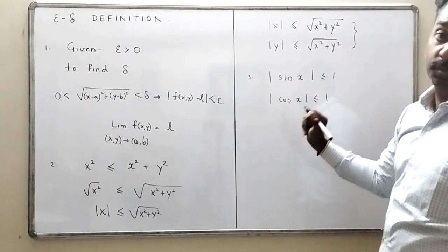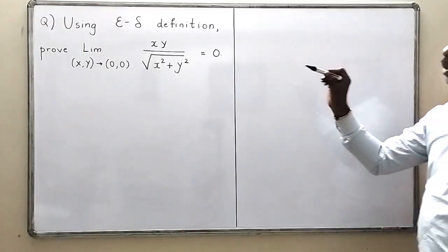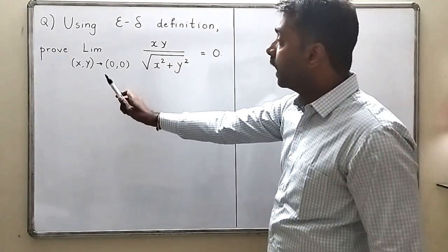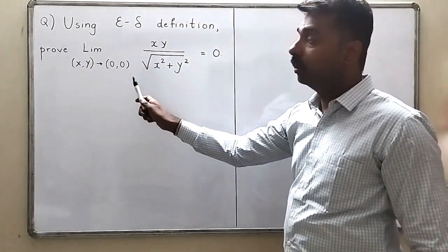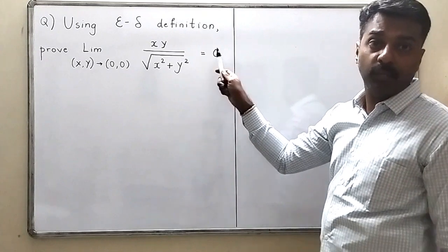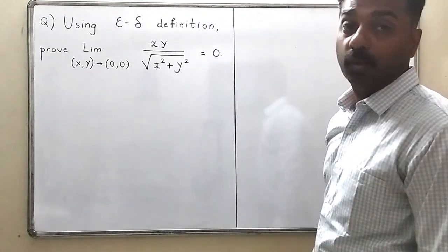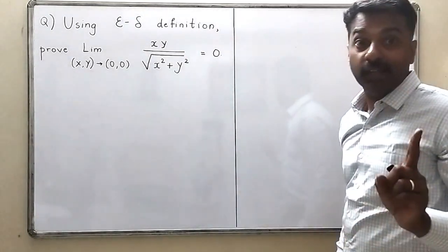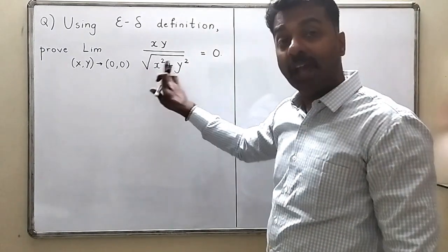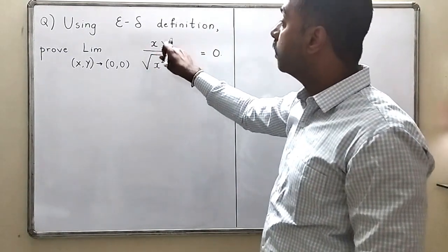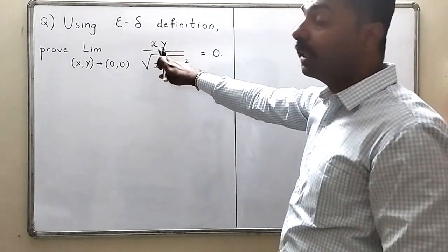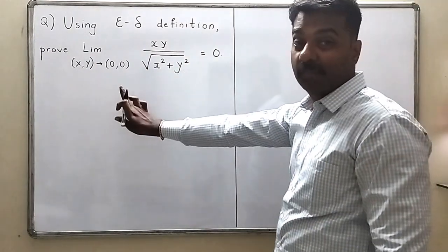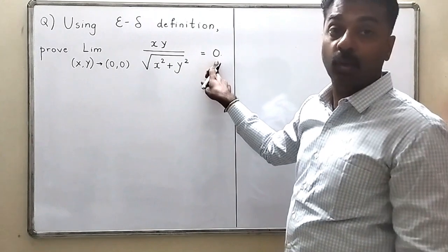Using epsilon-delta, I want to prove that the limit as (x,y) → (0,0) of xy / √(x²+y²) equals 0. We are not asked to evaluate — students sometimes use x = r·cos θ, y = r·sin θ to evaluate limits, which was done in the previous video. Here, we are trying to prove it using the epsilon-delta definition.